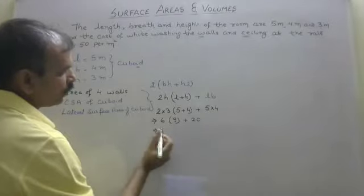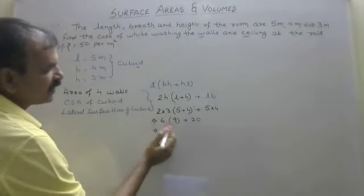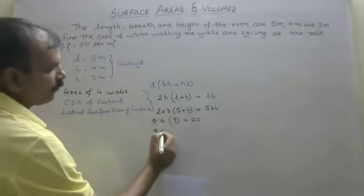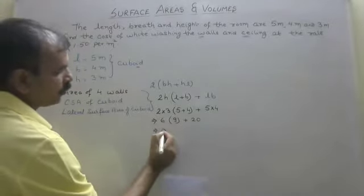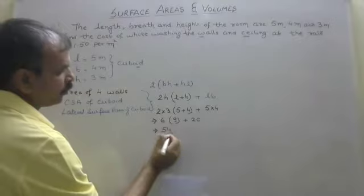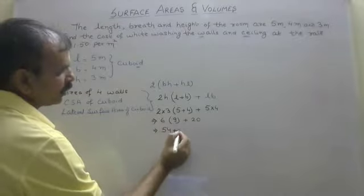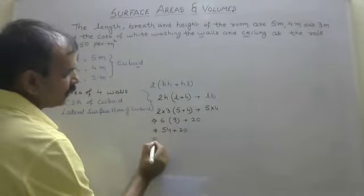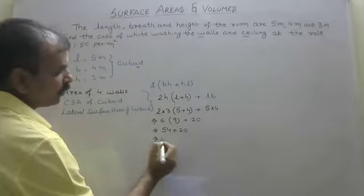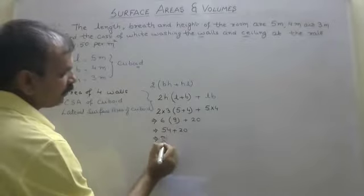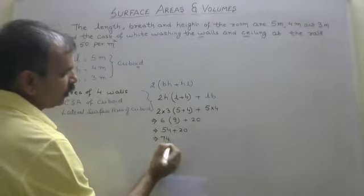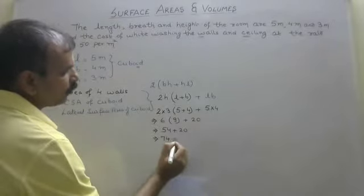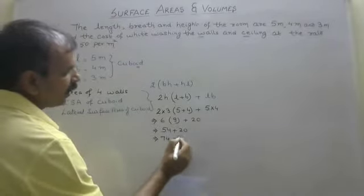So how much do we get? 6 × 9 = 54, plus 20, that is equal to 54 + 20 = 74 meter square. Your area has come out to be 74 m².